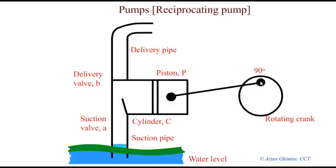When the rotating crank moves from 0 to 90 degrees the movement of the piston causes the increment in the volume of the cylinder. As the volume is increased the pressure is eventually decreased.